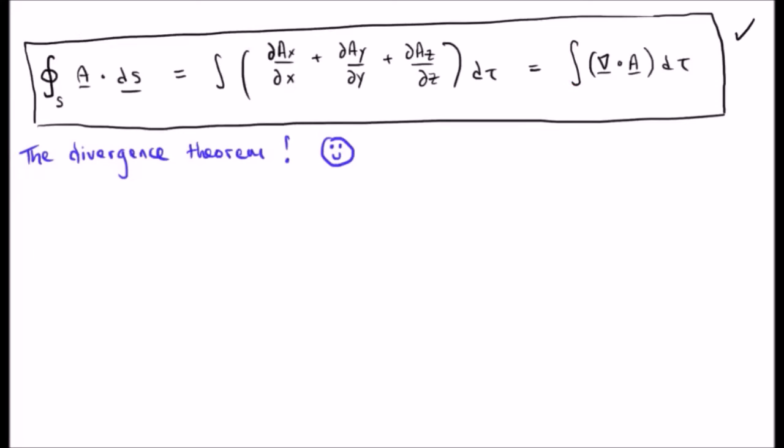You may remember that in Green's theorem, we went from a closed line integral to a surface integral. The divergence theorem is something similar, except we are going from a closed surface integral to a volume integral involving the divergence of the vector field.